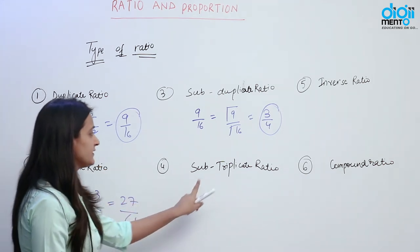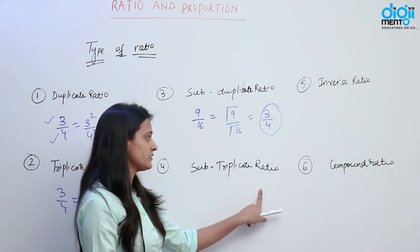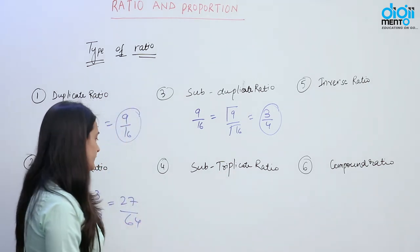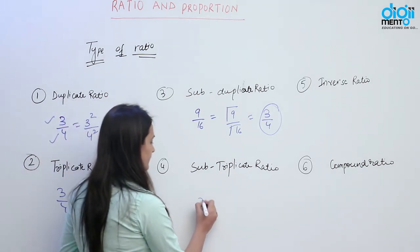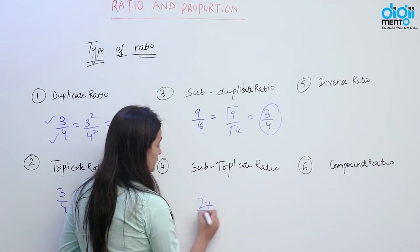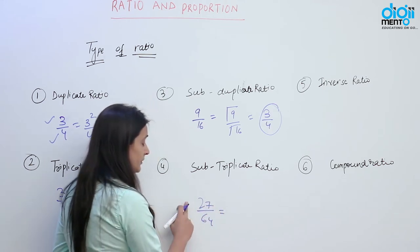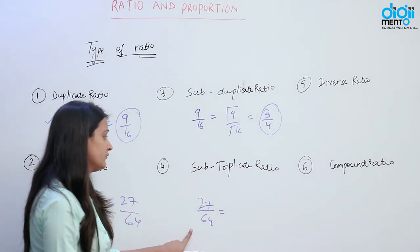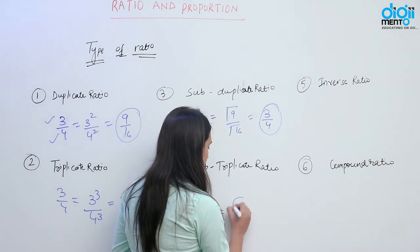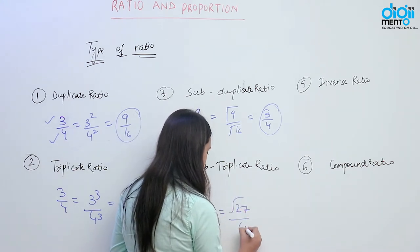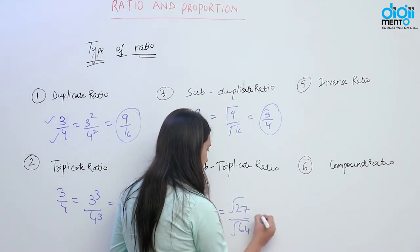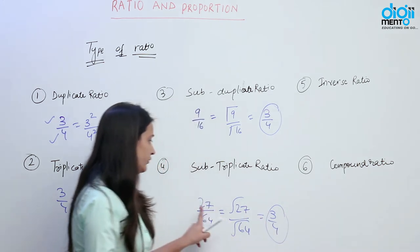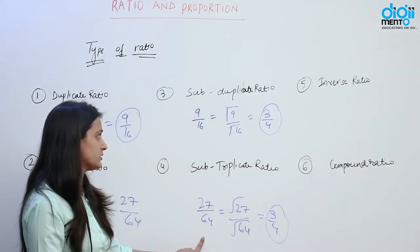Now, what is subtriplicate ratio? Subtriplicate ratio is the ratio of the cube root of the numbers. Suppose if we have the number 27 by 64, so what is the subtriplicate ratio of 27 by 64? Taking the cube root, we have 3 by 4 — this is the subtriplicate ratio of 27 by 64.